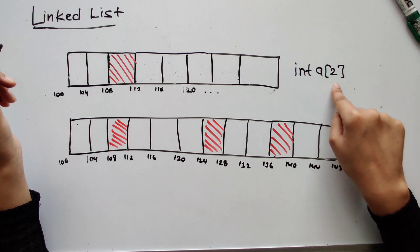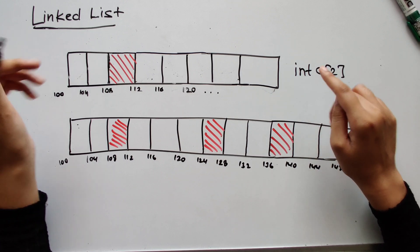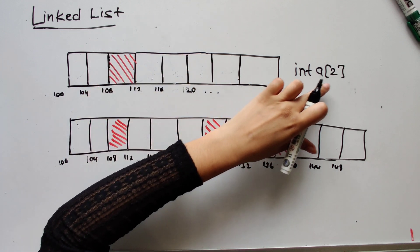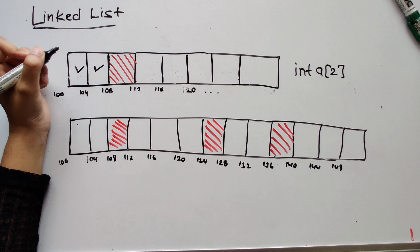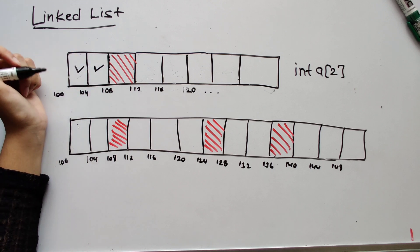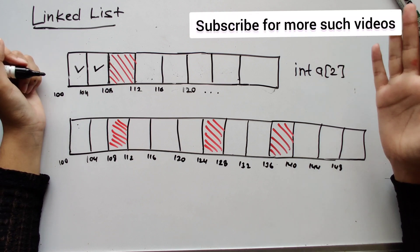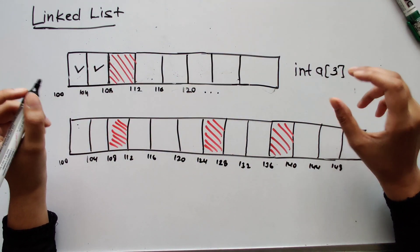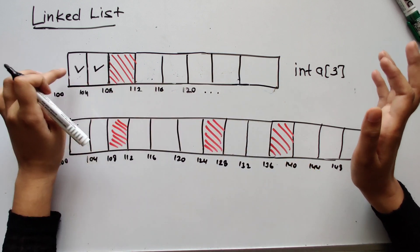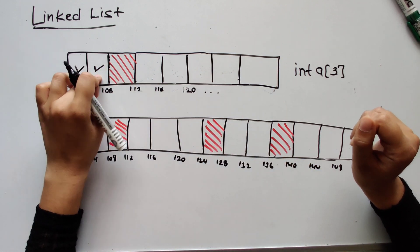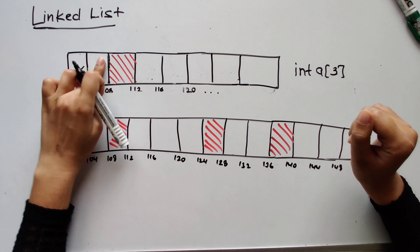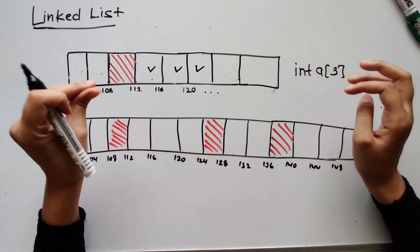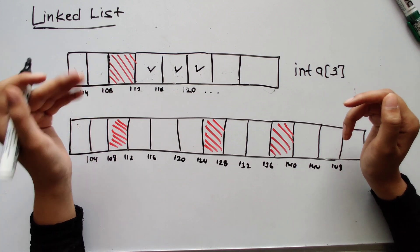Let's say I declared an array of integers with size 2. An array needs continuous blocks — only then can I store the array there. I need 2 blocks, so I take these two available blocks. At some later stage, if I want to increase the size to 3 elements, I need 3 continuous blocks. There are 2 here but the third is taken, so I can't just extend — I'll have to move the entire array somewhere else. This is a costly, tedious operation.